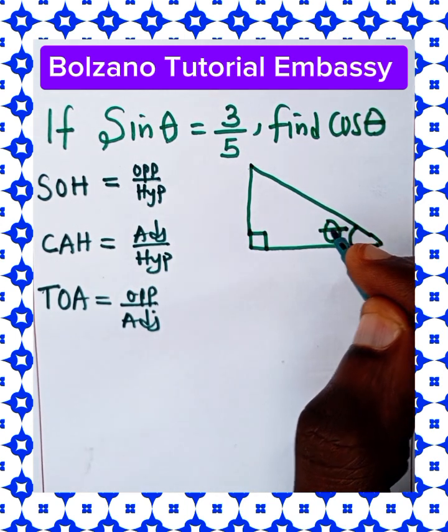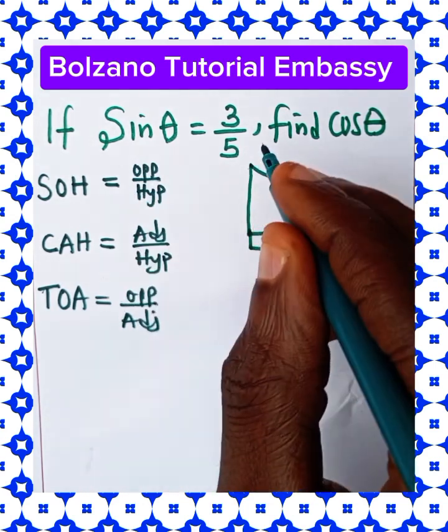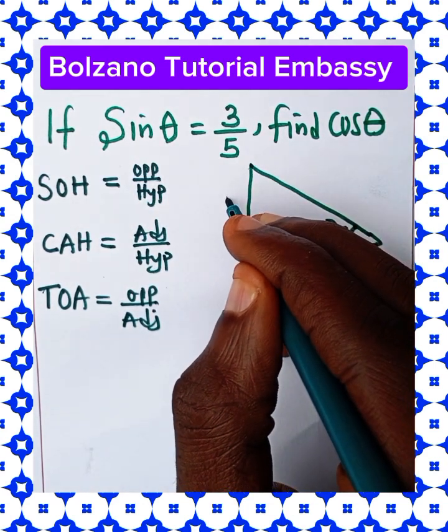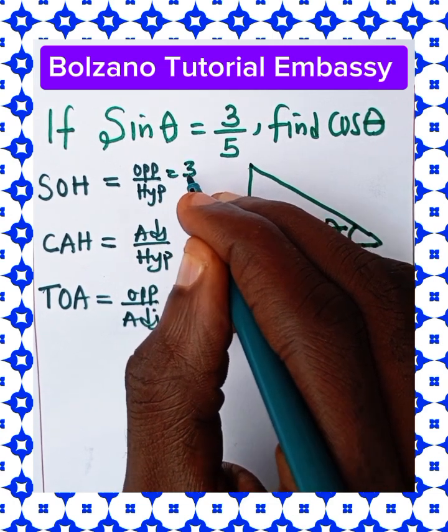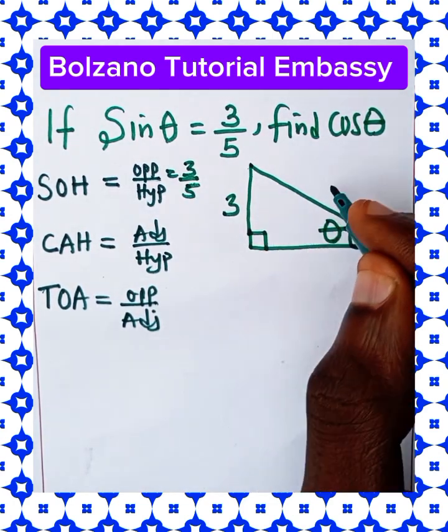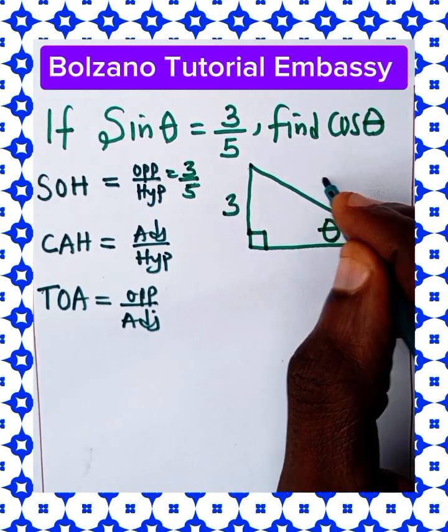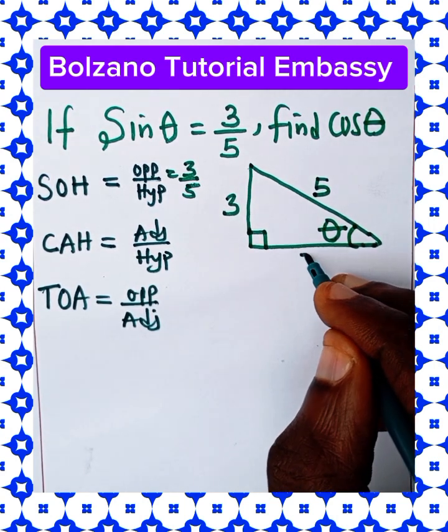This side, which is facing this angle, is the opposite side, and it is 3. The hypotenuse, the side facing the right angle, is 5. But we do not know this side. Let's call it x.